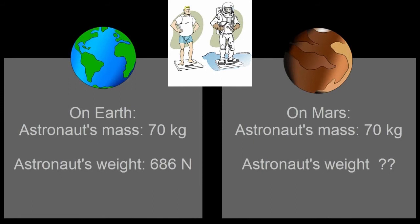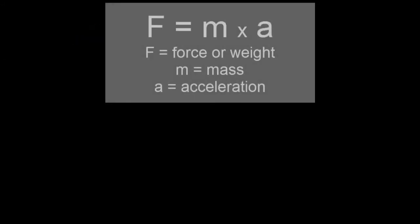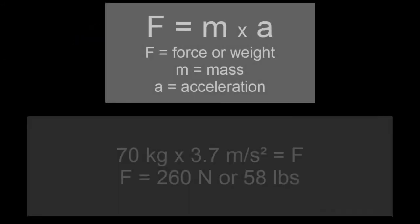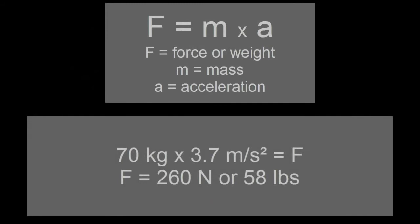If our astronaut has a mass of 70 kilograms, then their weight on Earth is approximately 686 newtons, or 154 pounds. If we use the equation F = m × a, force equals mass times acceleration, while using Martian gravity of 3.7 meters per second squared, we can figure out that on Mars, the astronaut will weigh only 260 newtons, or 58 pounds.